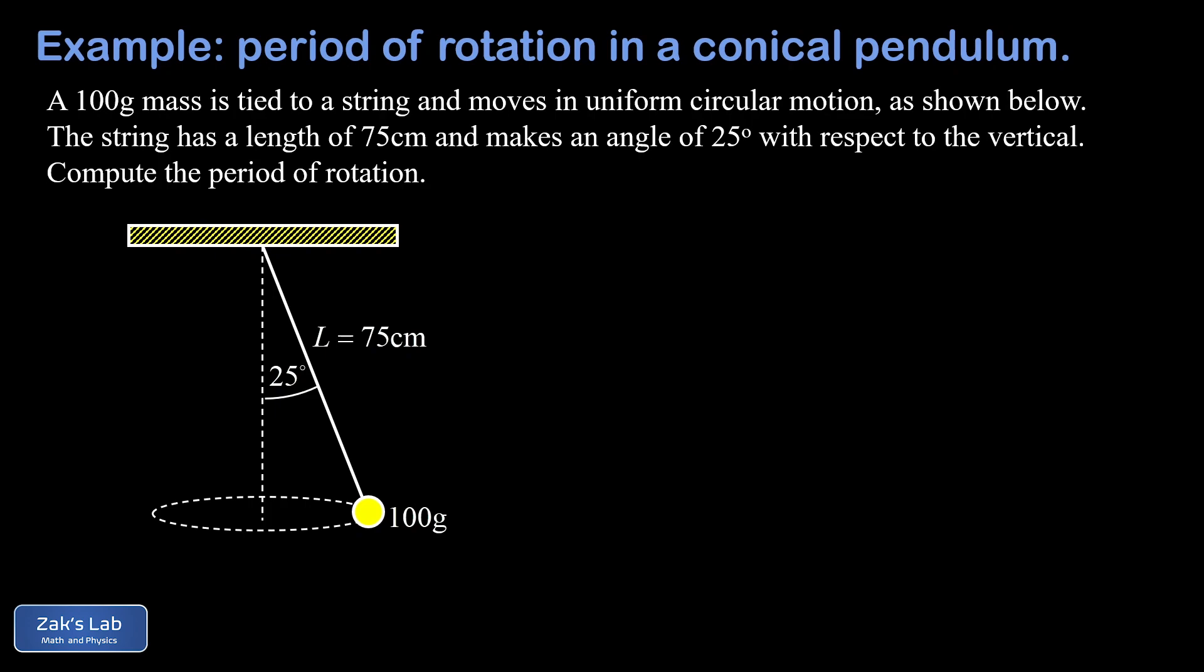It actually turns out if we keep everything symbolic for long enough that the mass is going to cancel out of the equations, so that 100 grams isn't even necessary to the problem. The first point I want to make is that the radius of curvature of the circular path is not 75 centimeters. That radius of curvature is actually 75 times the sine of 25 degrees, so we're just going to leave that as a little r for now.